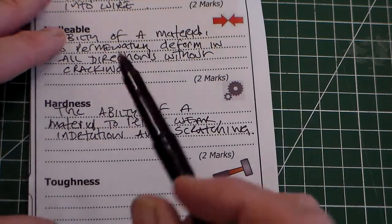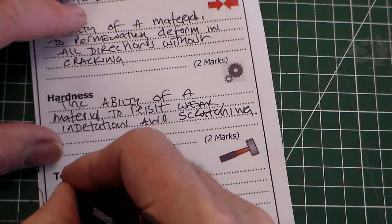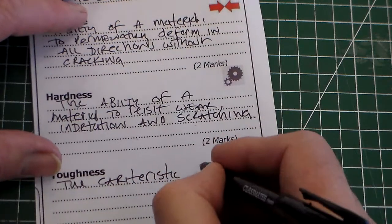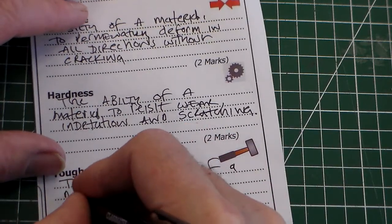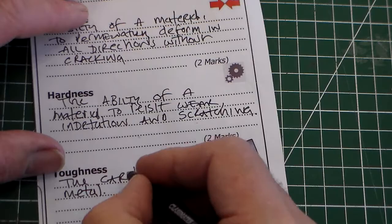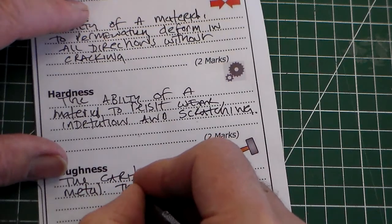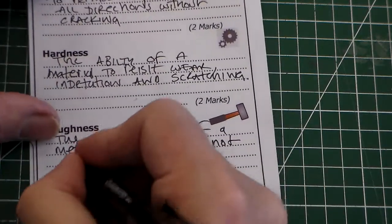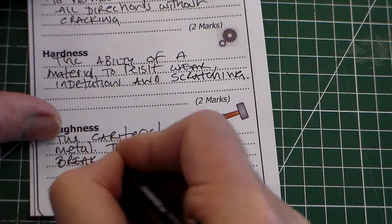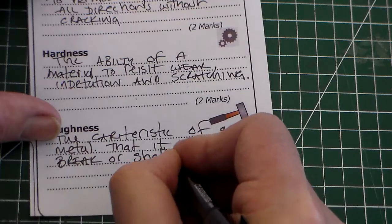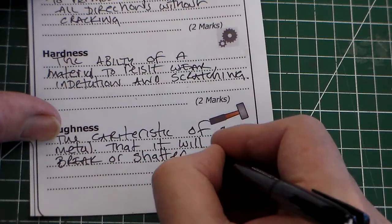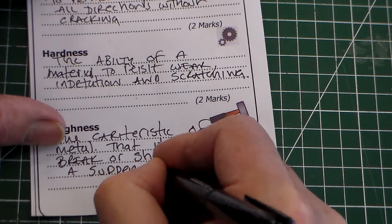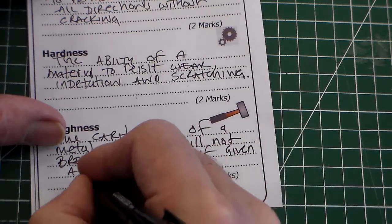So we get to toughness now. So that was hardness. Hardness is the characteristic of a material, or we can put metal because we're doing metals, that it will not break or shatter if given a sudden blow or shock knock.